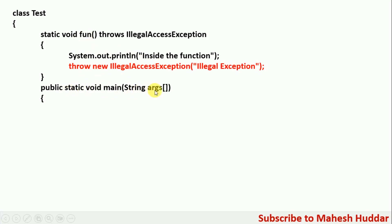We will add the main part of the program — that is public static void main. Because we are calling 'fun' here and this method is going to throw an exception explicitly, we have to put this call within a try block, since it will throw IllegalAccessException.